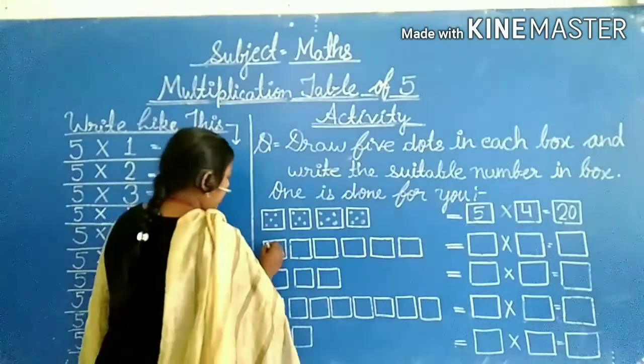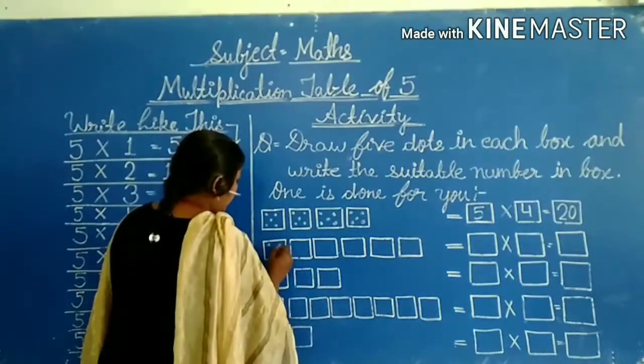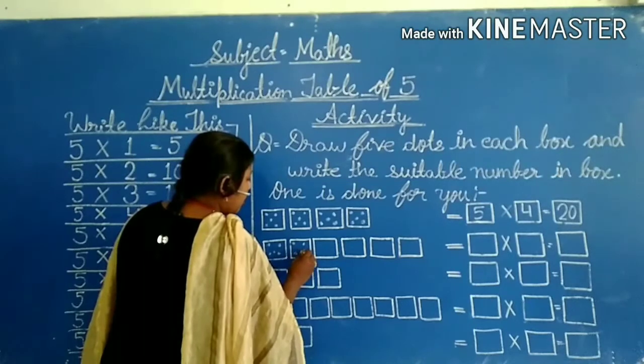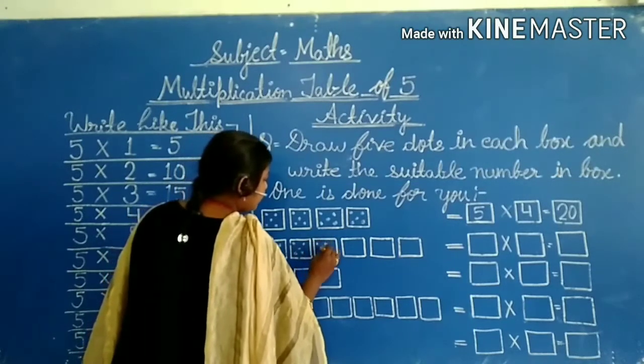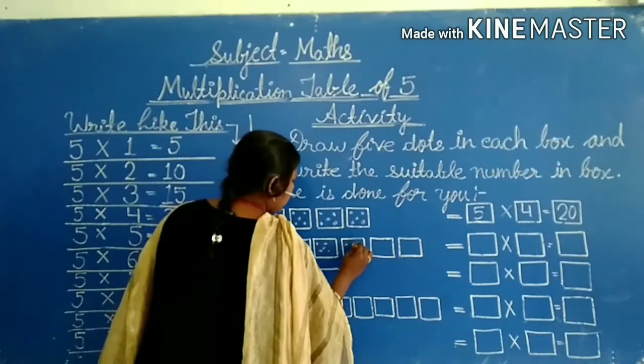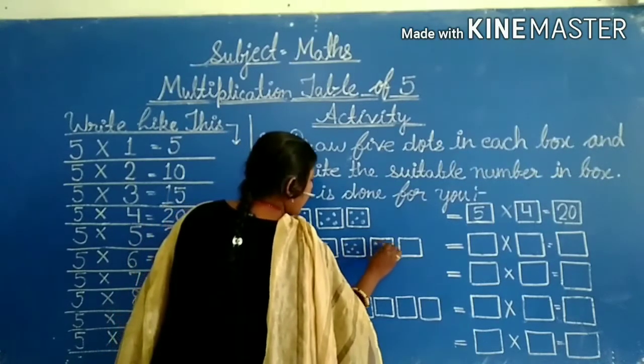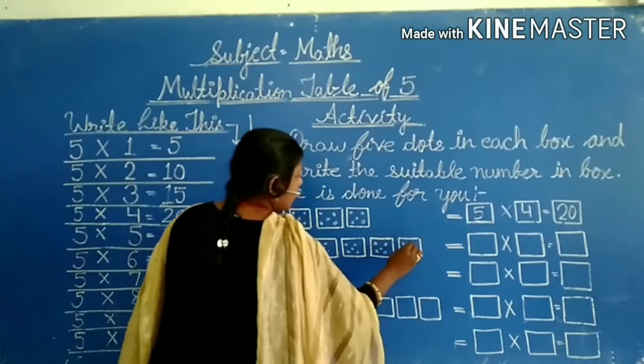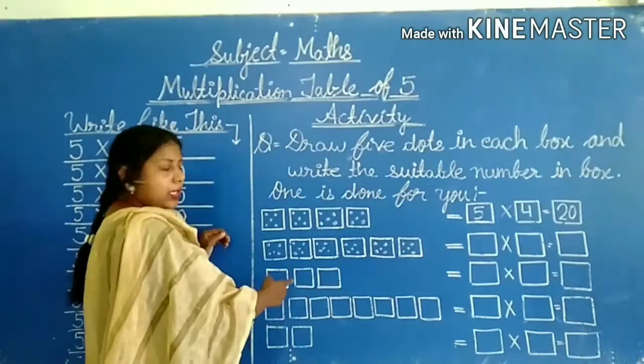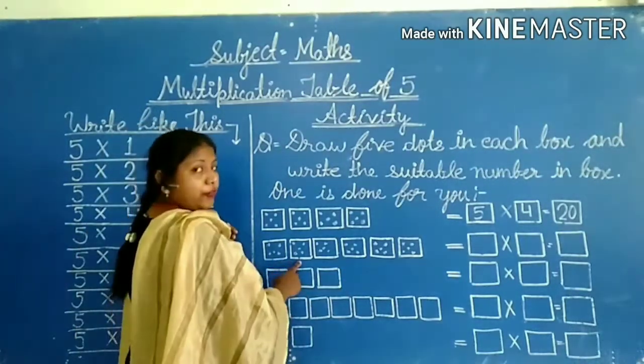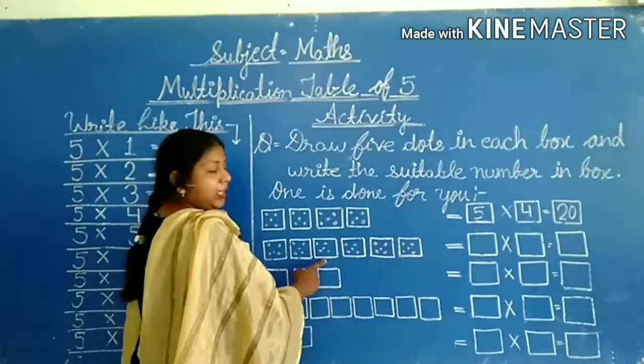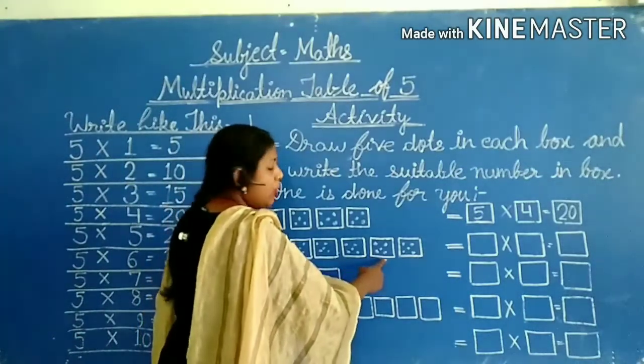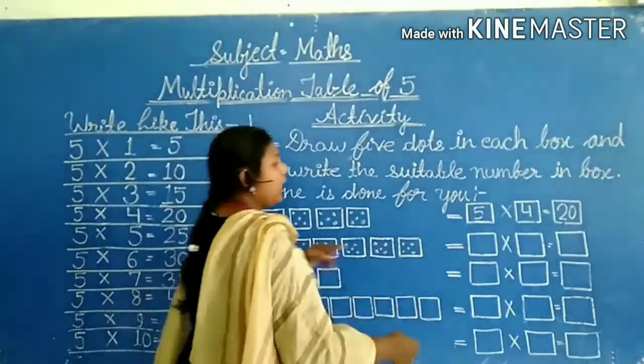In all boxes, we will have 5 dots. Now we will count. 5 plus 5 is 10, 10 plus 5 is 15, 15 plus 5 is 20, 20 plus 5 is 25. And this is our 5 dots.